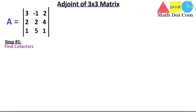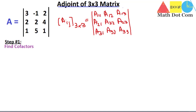Now what are the cofactors? We will start with the easiest method for finding the adjoint of a 3×3 matrix. The cofactor matrix will be Aij, where i is the row and j is the column, for a 3×3 matrix. The elements A11, A12, A13 are all cofactors.